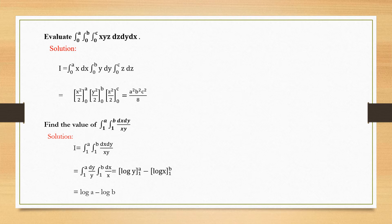Second problem: find the value of the integral over 1 to a, 1 to b of dx dy over xy. The inner integral belongs to x and the outer integral belongs to y. This gives: integral over 1 to a of dy/y multiplied by integral 1 to b of dx/x. Integrating 1/y gives log y, and 1/x gives log x. Substituting limits: log a minus log 1, and log b minus log 1. Since log 1 = 0, the answer is log a · log b.